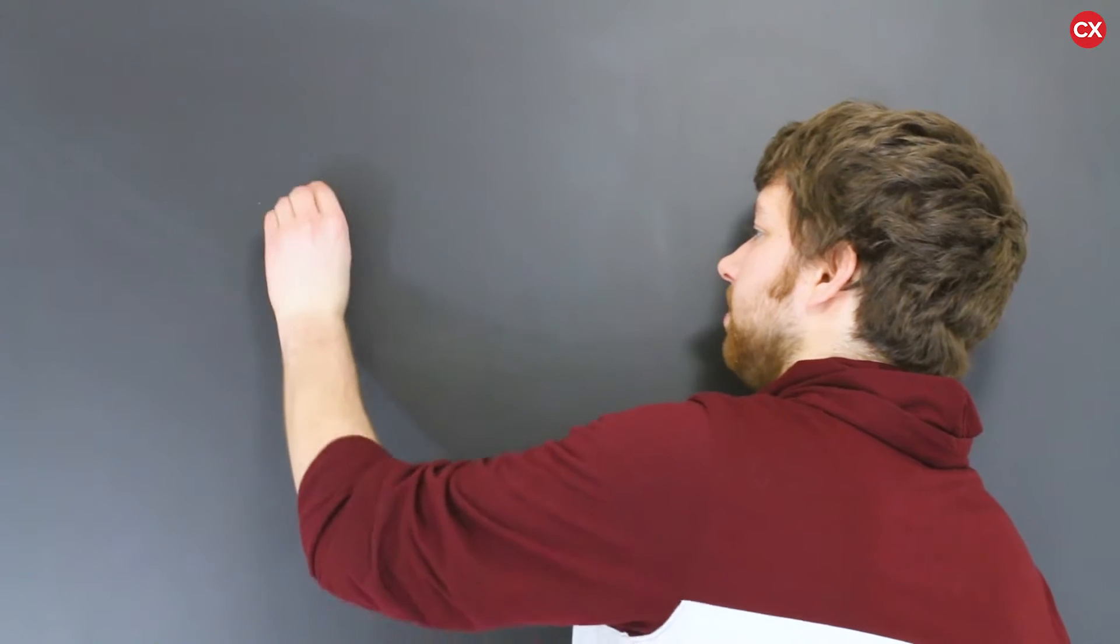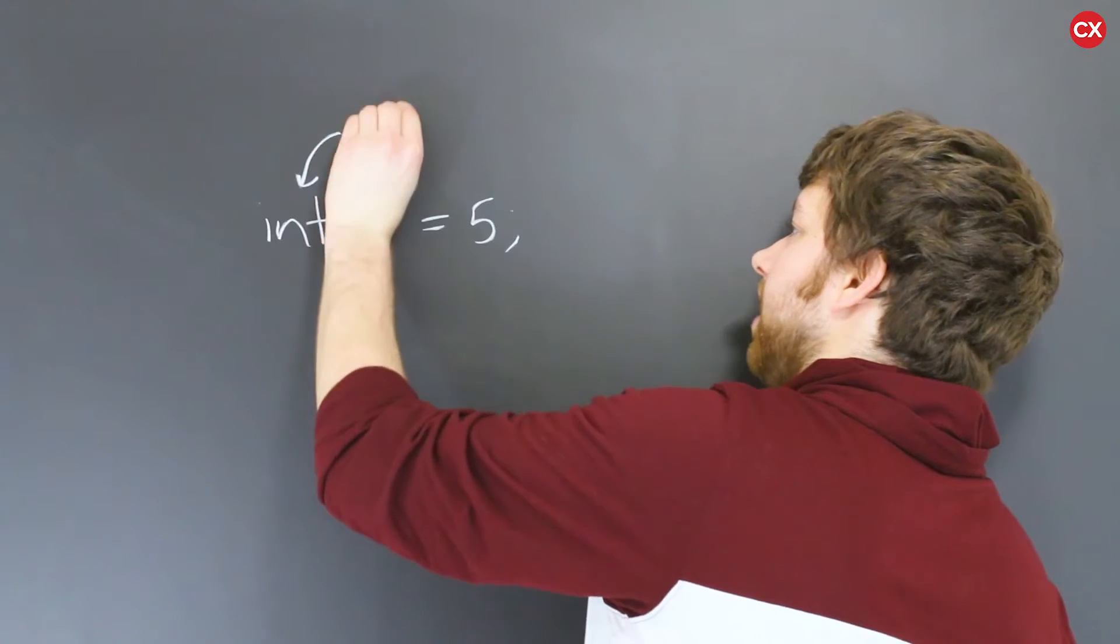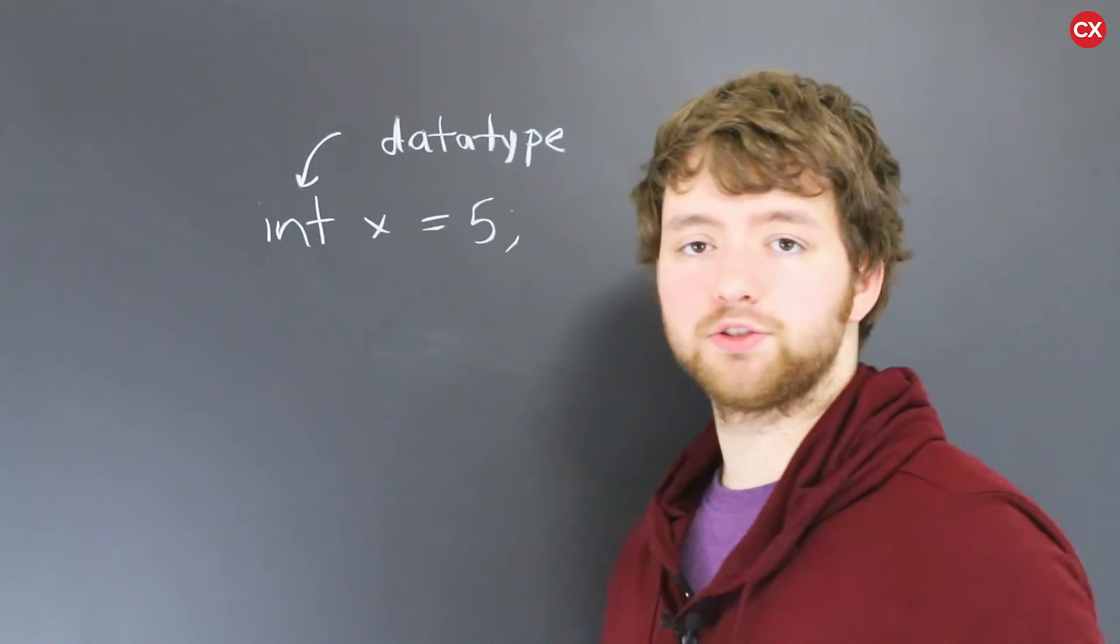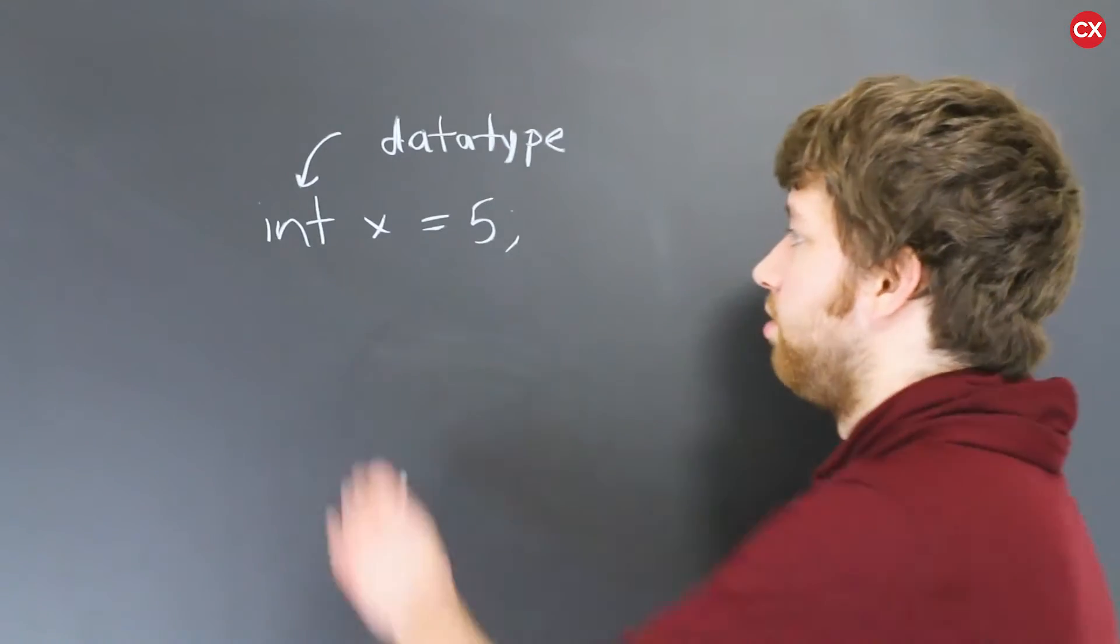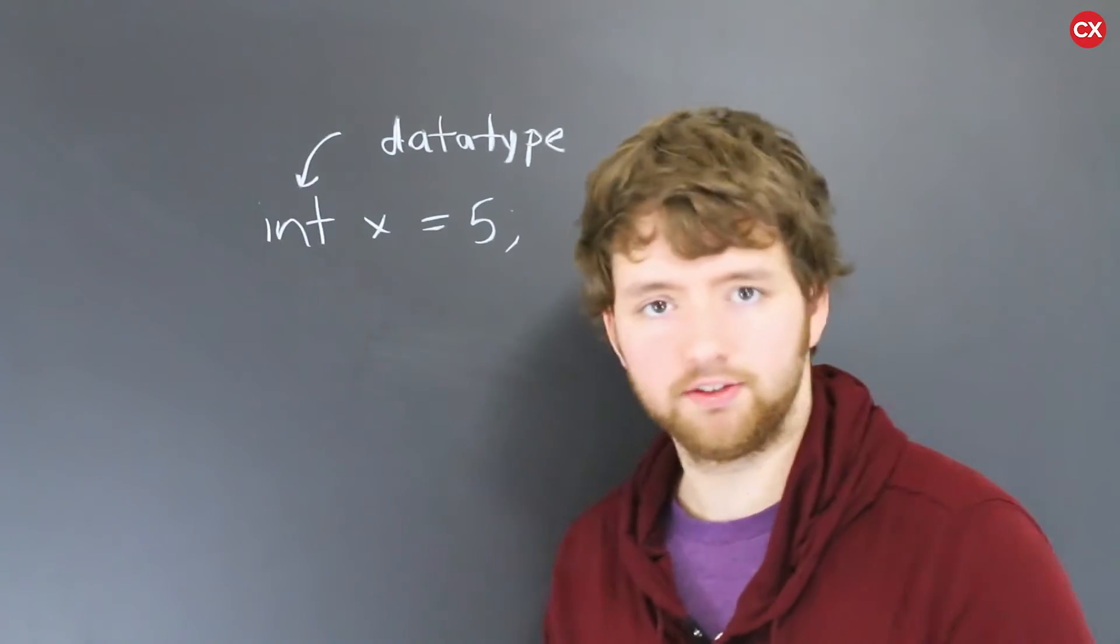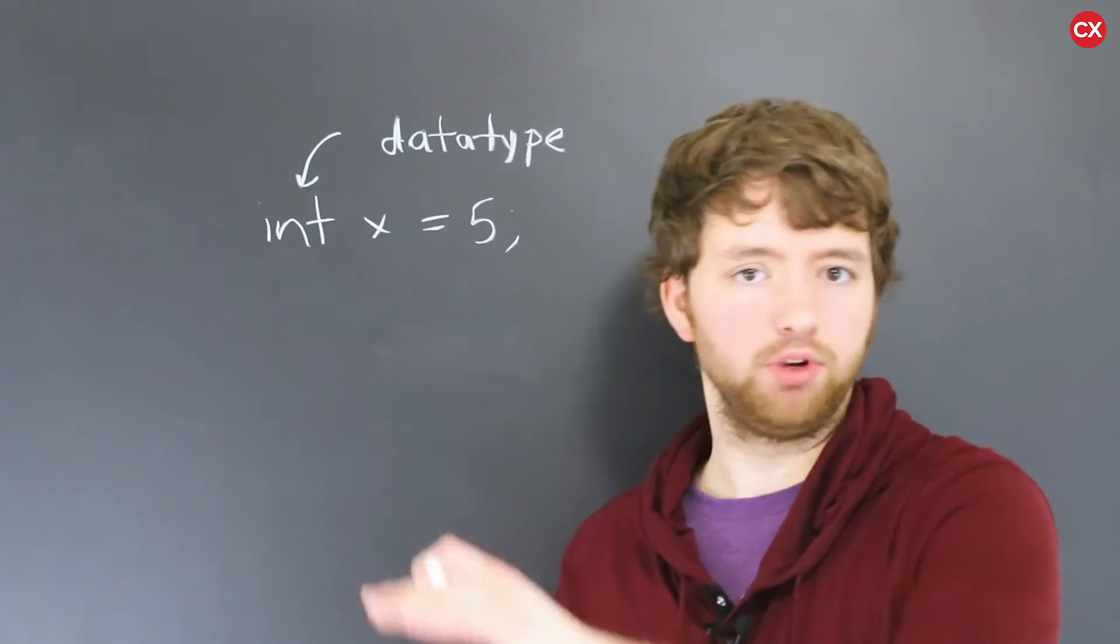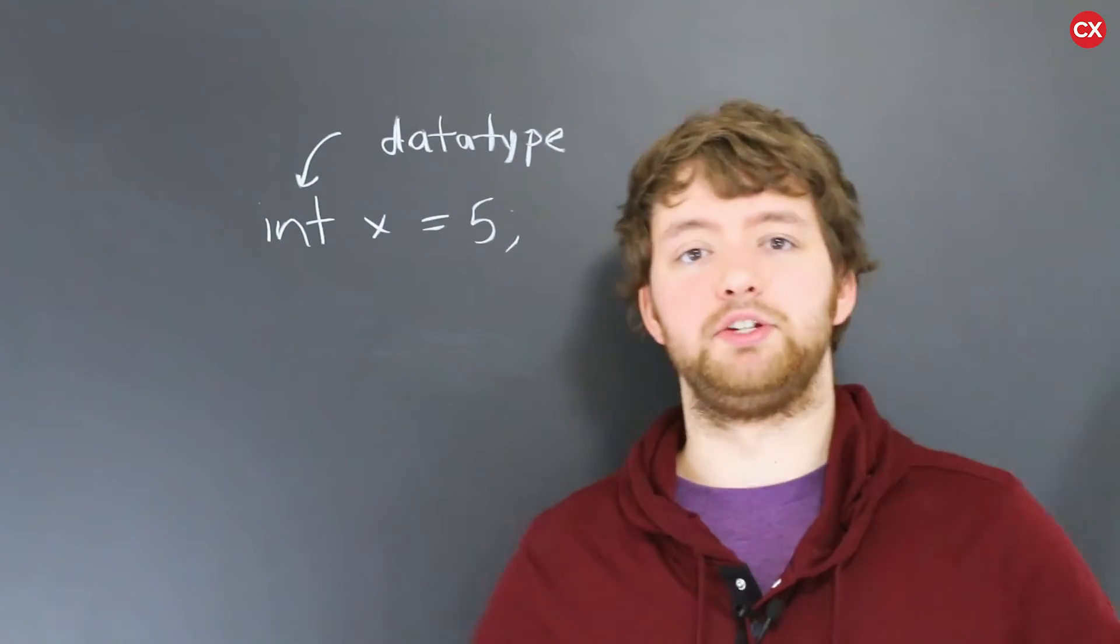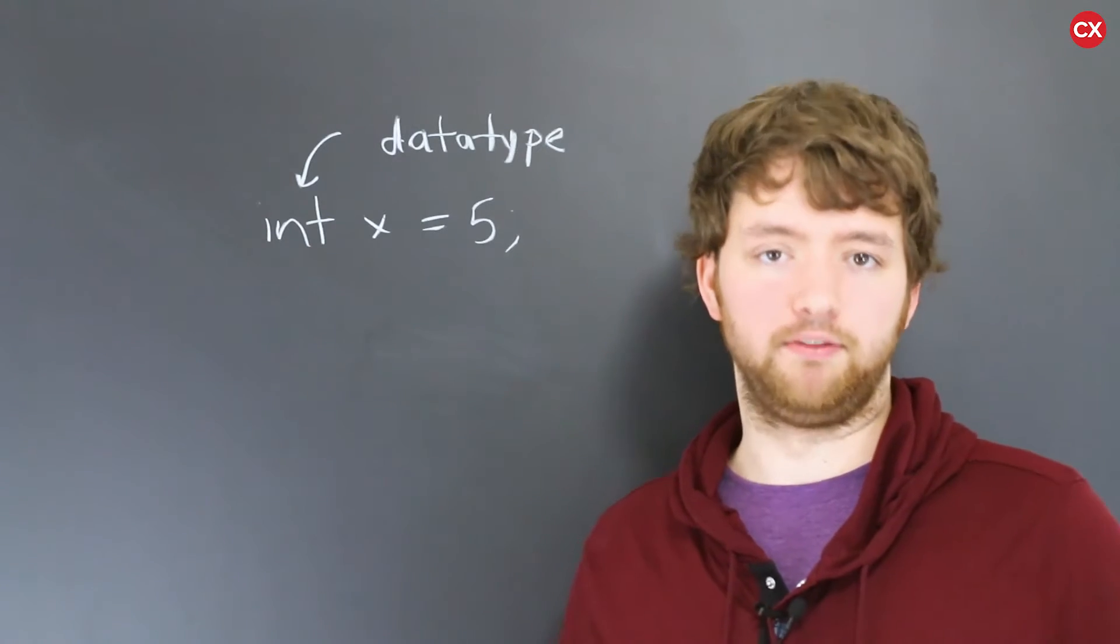When we create a variable in C++ we define a type at the beginning. So you've probably seen int x equals 5 as an example. This here is the data type. In this series we've also used the double data type which if you've watched the previous videos you guys would know that int restricts you to whole numbers positive zero and negative whereas a double will allow points so 5.3, 12.1, 0.7, negative 12.7 and you can see how the different data types make a difference.